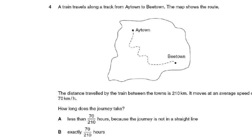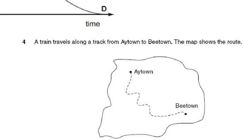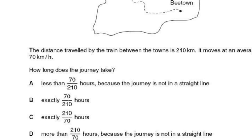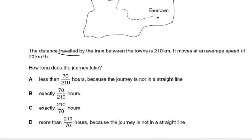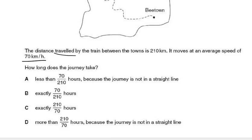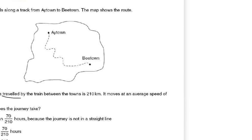Next problem: a train travels between two imaginary towns. The distance traveled along the track is 210 kilometers — we don't care about the straight-line distance, just the track length. The train moves at an average speed of 70 kilometers per hour. We need to find how long the journey takes.